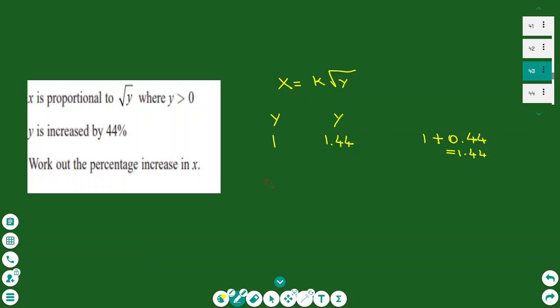My equation after the percentage increase will look like this: x equals k times the square root of 1.44y. The original equation was k times the square root of 1y. Now what is the square root of 1.44?